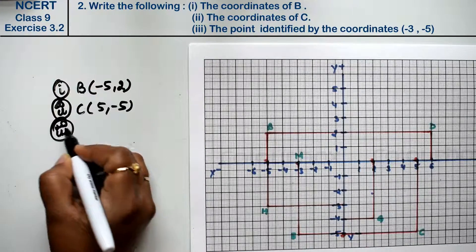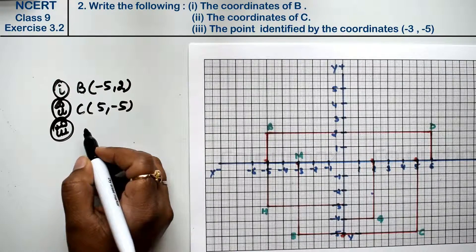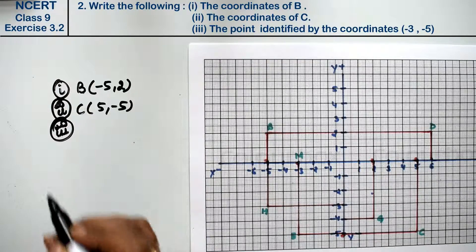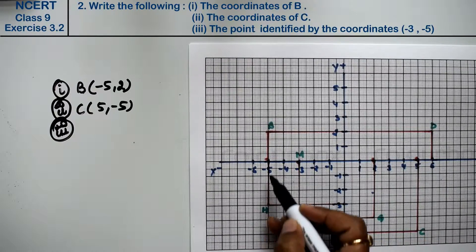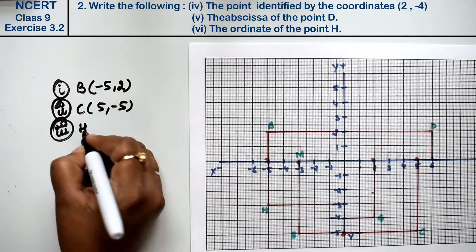Let's do third part. Third part is the point identified by the coordinate minus 3 and minus 5. What is the point? H point. Right, friends?